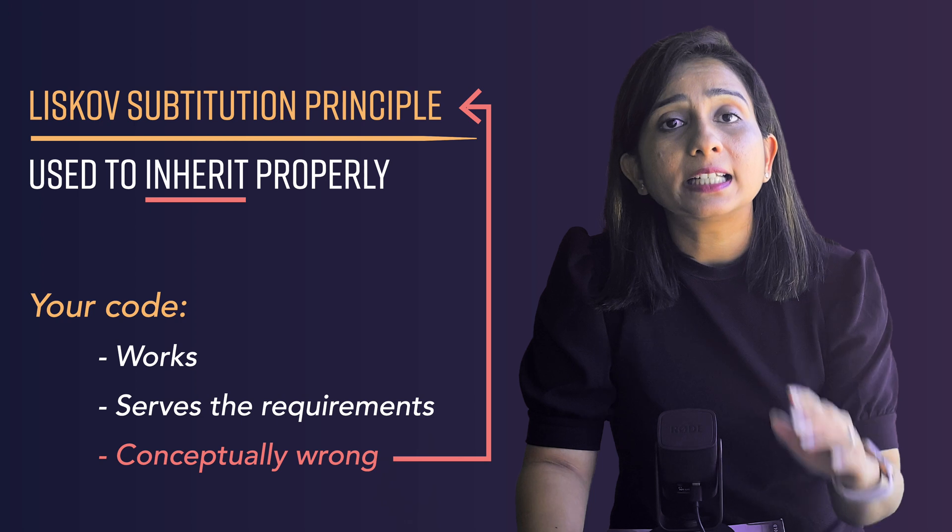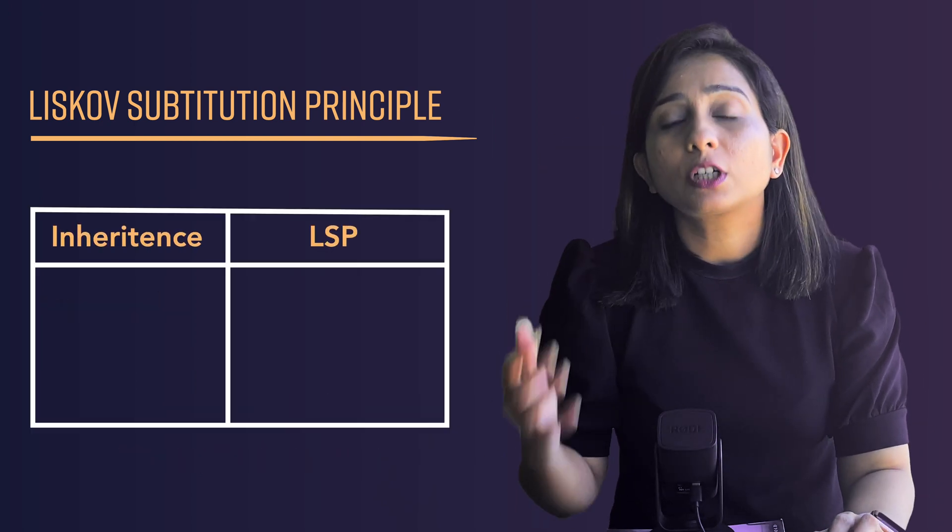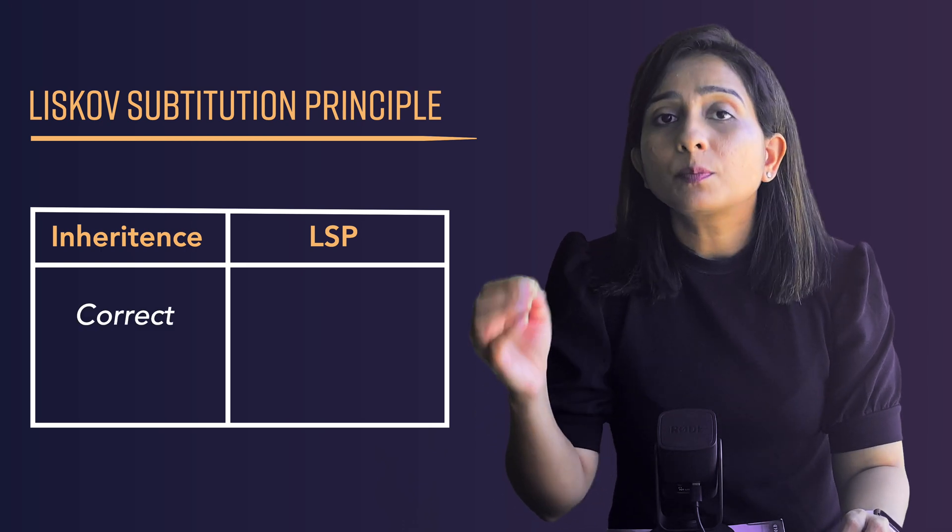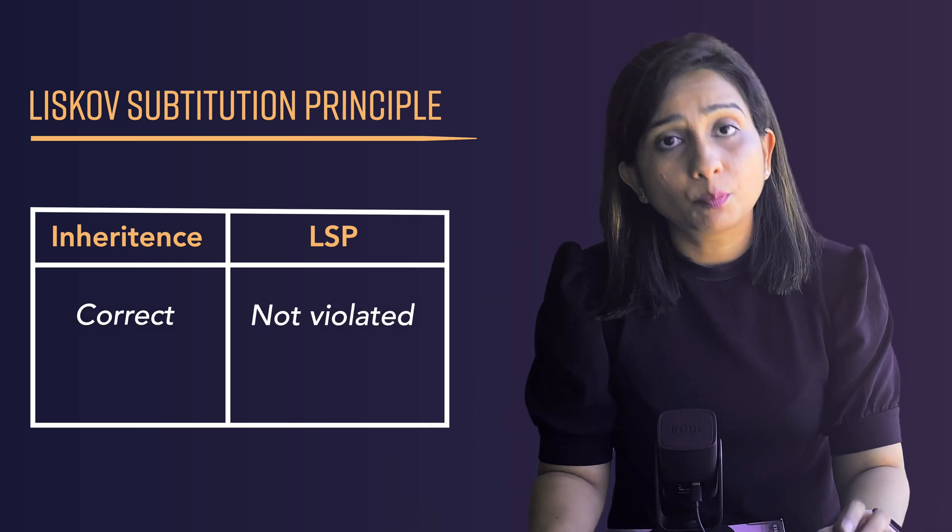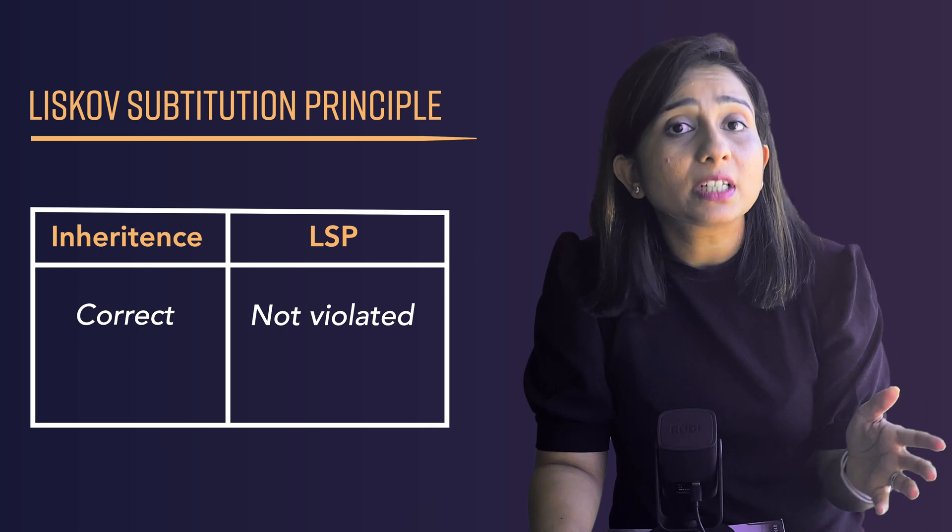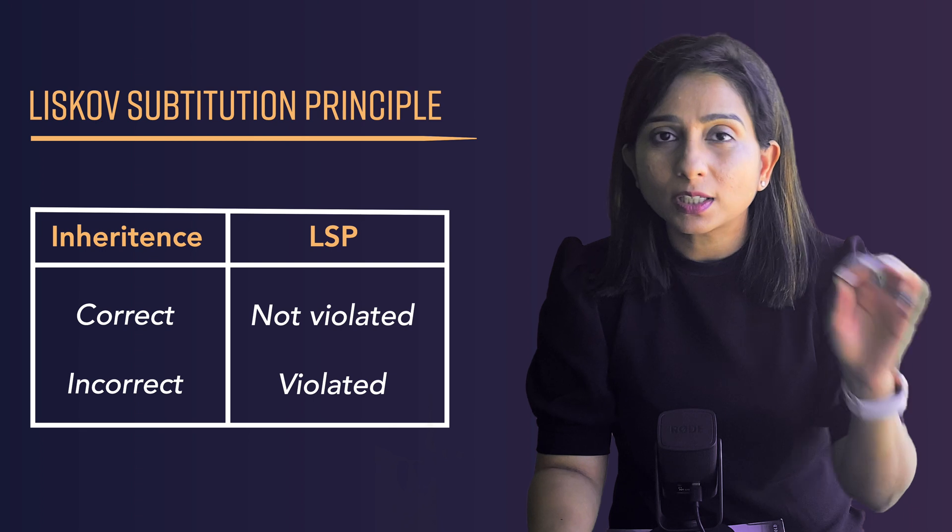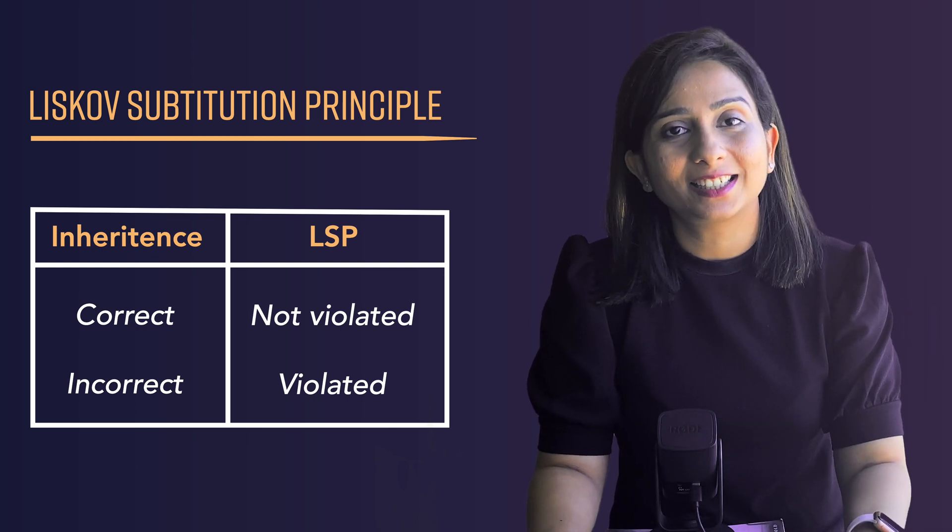This principle is one of them which actually tells you that if you have done inheritance in a wrong way, basically if you have designed your classes, parent and child classes in a way which is correct, this principle will not be violated. But if the way you have inherited the classes is wrong, this principle will be violated and you will get to know that you have done something wrong with the way you have inherited the classes.